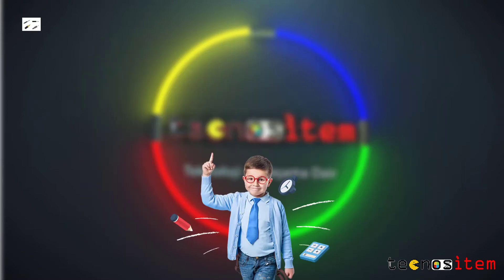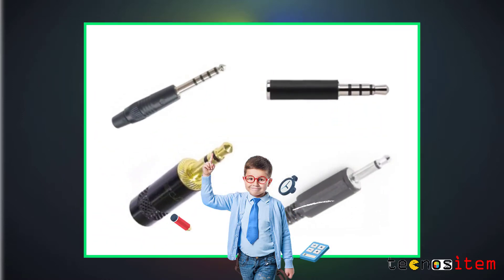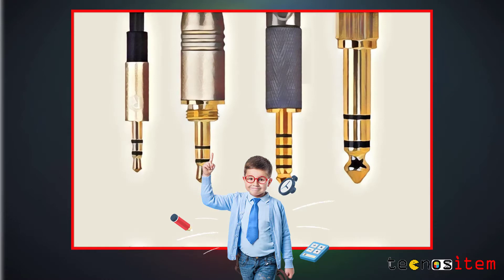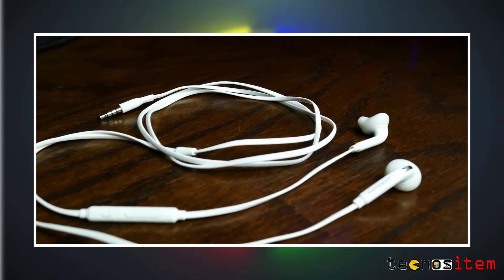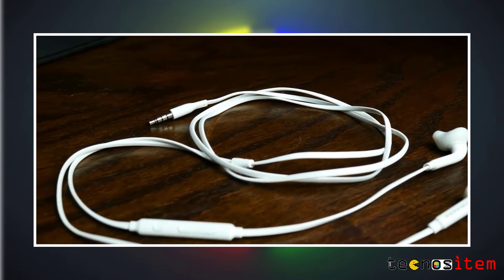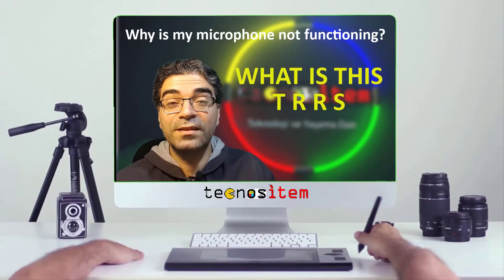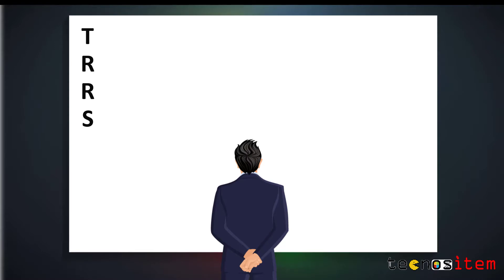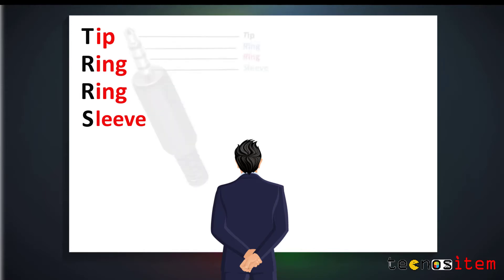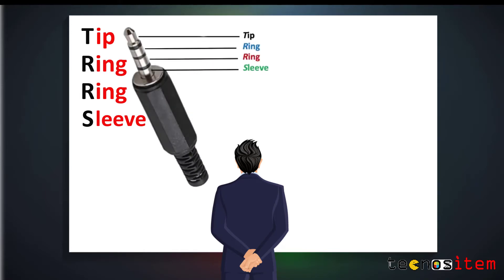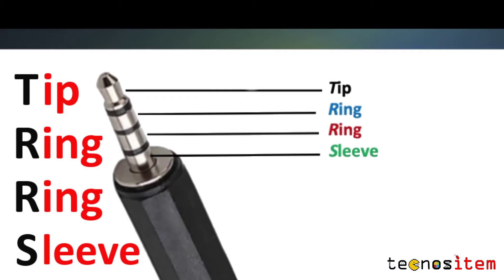I do not want to hurl too many technical words, but actually what we are not aware of is that there are multiple types and shapes of 3.5mm audio connections. Many new headsets come with a cable type we call 4-pin or TRRS connection. TRRS is an abbreviation of the words tip, ring, ring, sleeve in English. These words are the names given to the sections on the pinout of the 3.5mm connection cable. If we take a closer look at the connection end, we see that it consists of four metal parts separated from each other by small plastic rings.